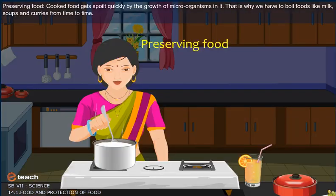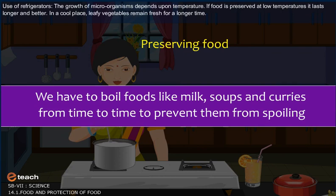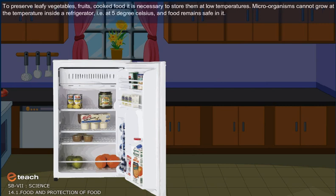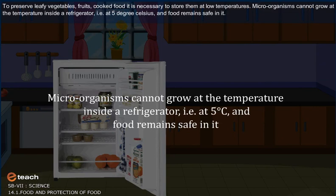Cooked food gets spoiled quickly by the growth of microorganisms in it. That is why we have to boil foods like milk, soups, and curries from time to time. The growth of microorganisms depends upon temperature. If food is preserved at low temperatures, it lasts longer and better. In a cool place, leafy vegetables remain fresh for a long time. To preserve leafy vegetables, fruits, and cooked food, it is very necessary to store them at low temperatures. Microorganisms cannot grow at the temperature inside a refrigerator, that is at 5 degrees Celsius, and food remains safe in it.